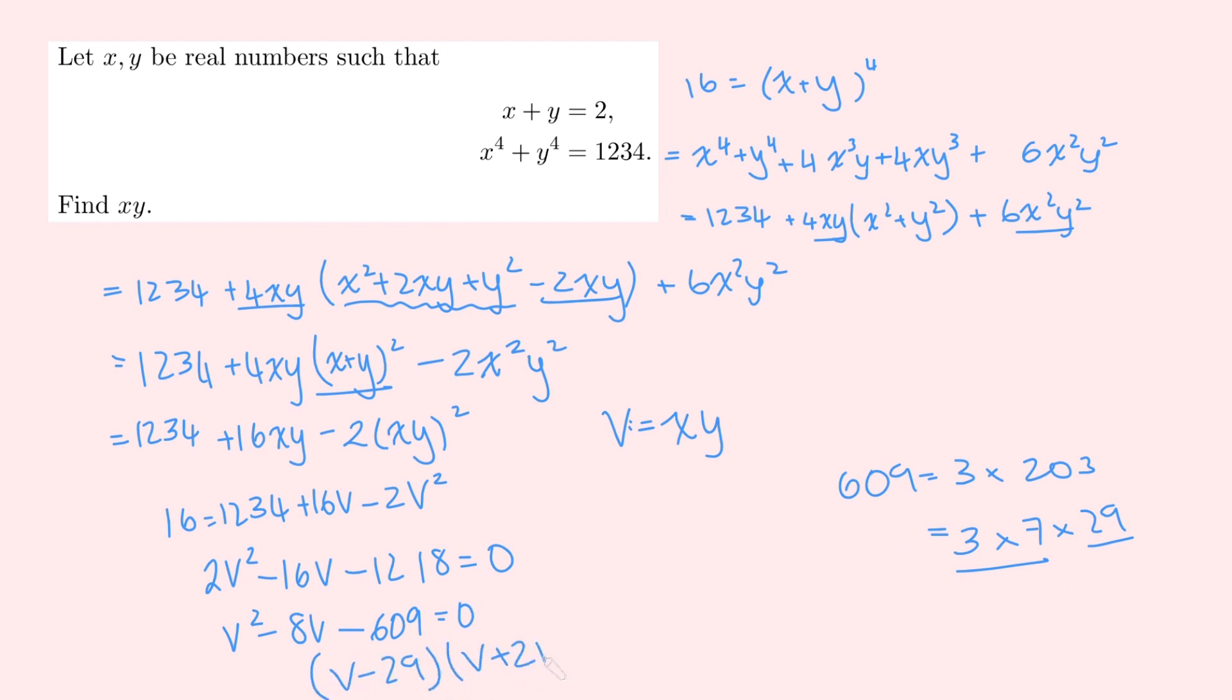So we get v minus 29, v plus 21 equals 0. And that means that v is either 29 or v is minus 21. So the answer to this for x times y is either going to be 29 or minus 21. But it has to be one of these two numbers. And it's our job to work out which it is.